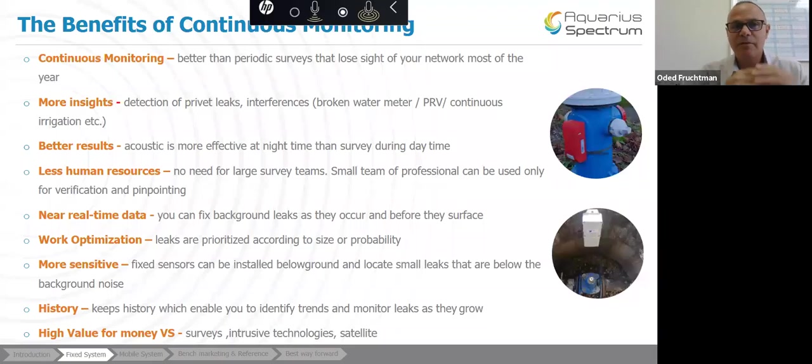And one of the things that I want to start with is the benefit of continuous monitoring. The first benefit of having continuous monitoring is, first of all, it's much better and effective than having periodic surveys. Because periodic surveys, actually, you lose sight of your network. You know what's happening now, but then if you don't do it often, then once you walk out of a specific DMA or a specific territory, then you lose sight of this area. And as you know, leaks surface every day.